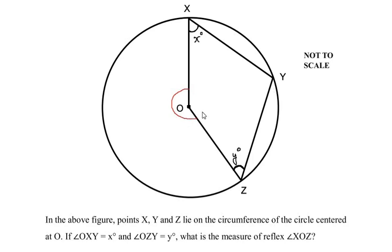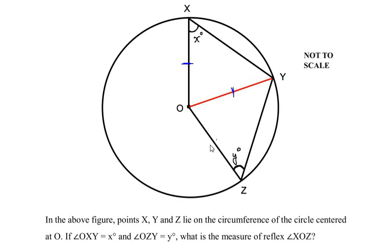Let us start by drawing a line between points O and Y. This line divides the given shape into two triangles. OX is the radius of the circle, similarly OY is the radius of the circle, and OZ is also the radius of the circle. Now let us consider triangle OYZ.